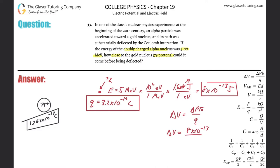So this is 8 times 10 to the minus 13th, all divided by 3.2 times 10 to the minus 19th. And we find that its potential change is going to be about 2.5 times 10 to the sixth volts.